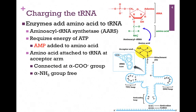Let's look at that process of attaching the amino acid to the tRNA molecule, called charging the tRNA. It's carried out by a very specialized enzyme — aminoacyl tRNA synthetase, or AARS for short. And as we'll see, we have to first charge the amino acid by transferring an AMP from ATP. That's our energy cost.